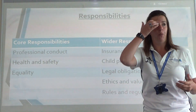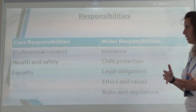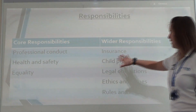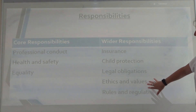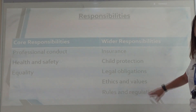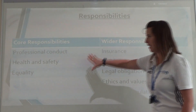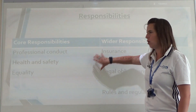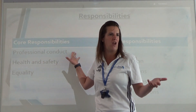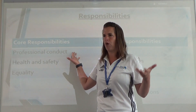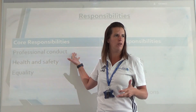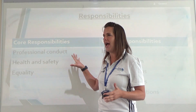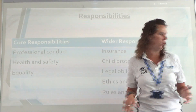Different responsibilities that sports leaders all need: you will need to explain what all of these are - professional conduct, health and safety, equality, insurance, child protection, legal obligations, ethics and values, and rules and regulations. Again, you're listing and explaining what they are, saying what they are and why we need them. Why, as a teacher, do I need to behave professionally? Is it appropriate for me to come in every morning and swear at you? No, it's not very professional. So it's about why, as leaders, we take on board all of these things.